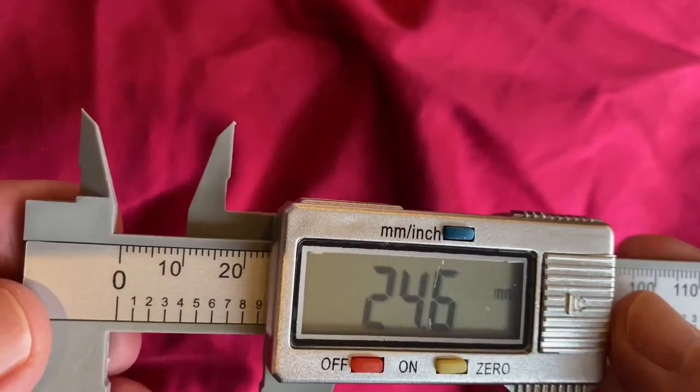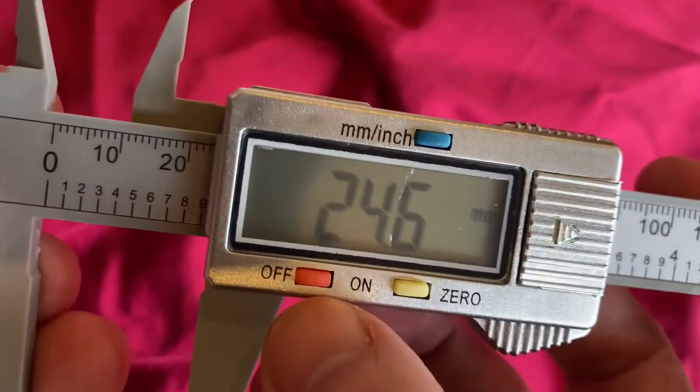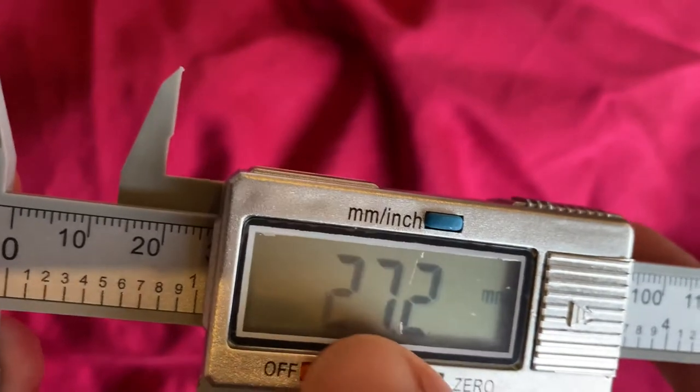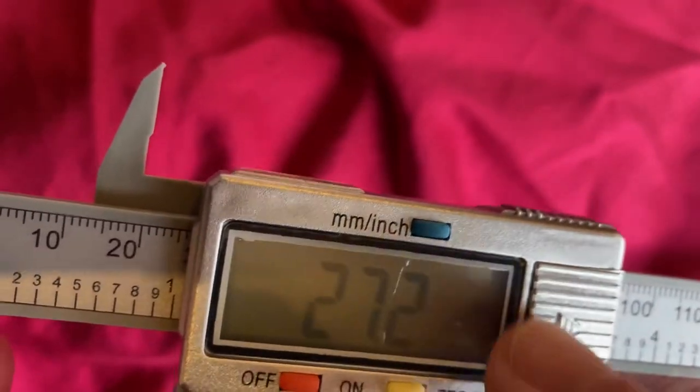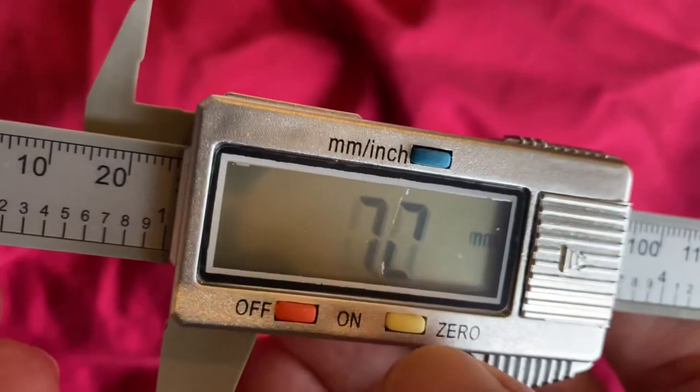The key thing is does it measure properly. So we've got a zero button here, we've got an on-off button here. Also if you move it, it'll switch on. And then we can switch that back on. We can go from millimeters to inches and there's a zero button as well.